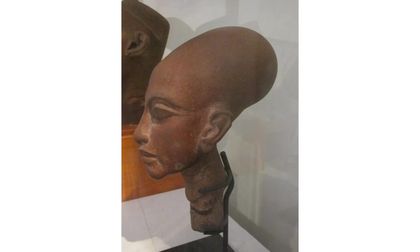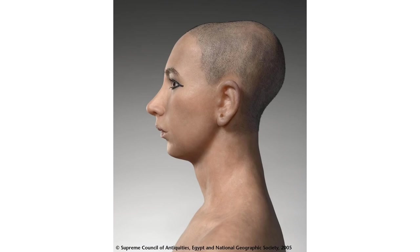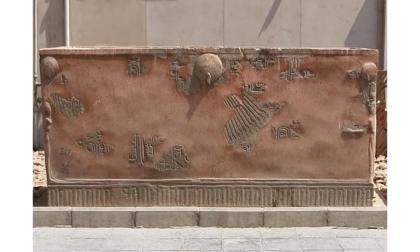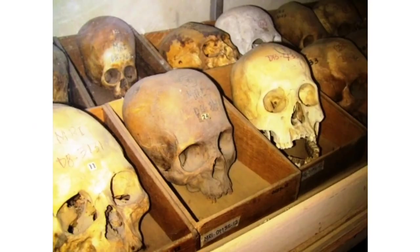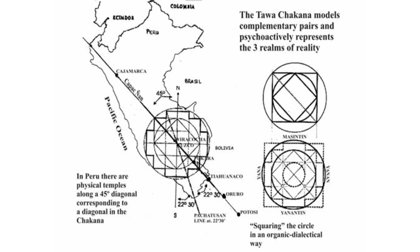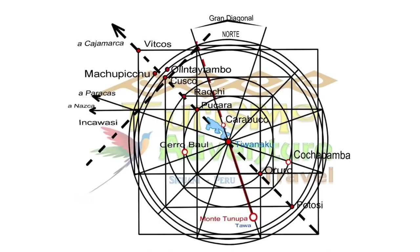So did they actually look like this? Their skeletons have never been found. Tutankhamun did have a slightly elongated head, and this is the sarcophagus of Akhenaten that was completely destroyed. Now in Peru there are many different shapes and sizes of elongated heads, and they're found along this line called the Kapak Ñan, also known as the Path of Viracocha.